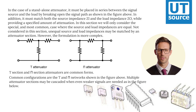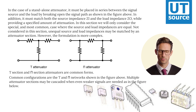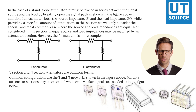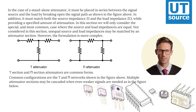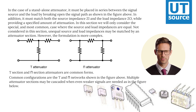T-section and P-section attenuators are common forms. Common configurations are the T and P networks shown in the figure above. Multiple attenuator sections may be cascaded when even weaker signals are needed, as in the figure below.